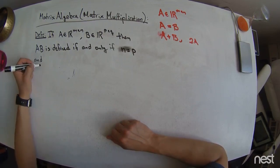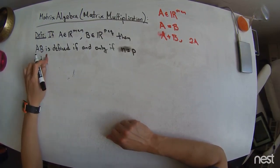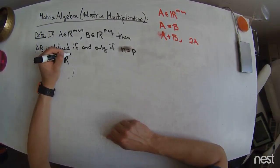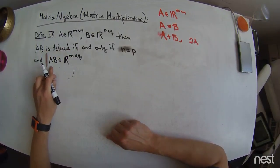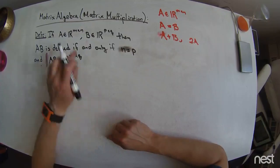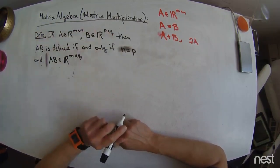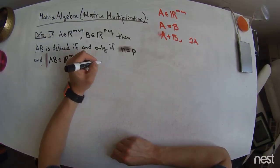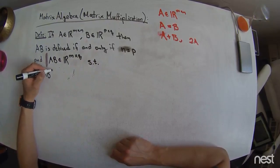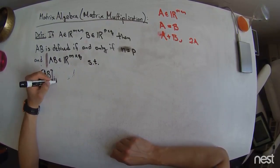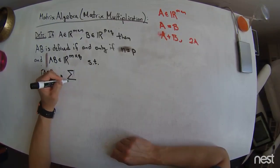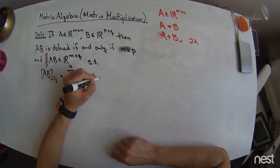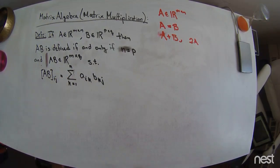So we'll also say, and the matrix A times B is going to be a matrix that has M rows in Q columns, so the product picks up the remaining dimensions, the number of rows from the A matrix, and the number of columns from the B matrix, such that the elements of AB, so the IJ element of AB is going to be the sum K equal 1 to N of A sub IK B sub KJ, where those come from the A and B matrix.